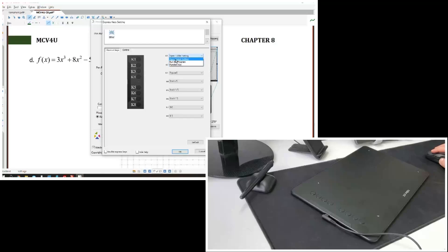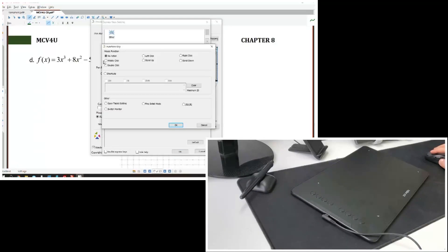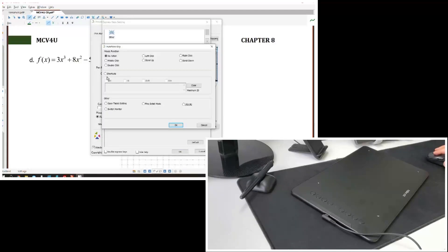Let's go to the express keys. K1 is the first button at the top and it goes like K2, K3, and so on. Choose the button, go to the function key, and then write the shortcuts. And that's it.